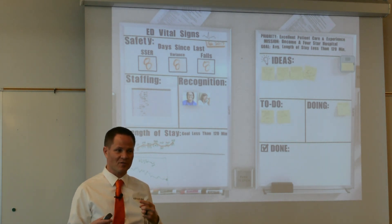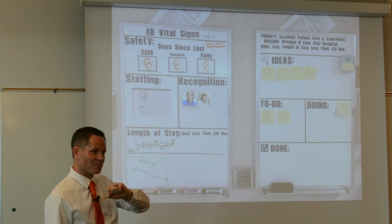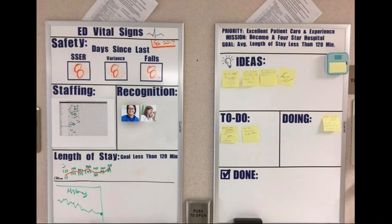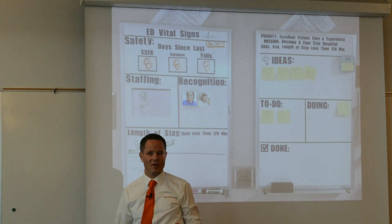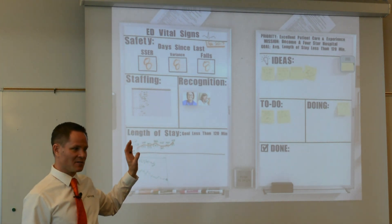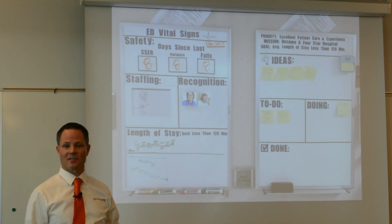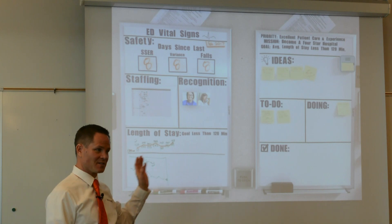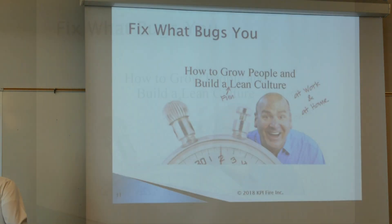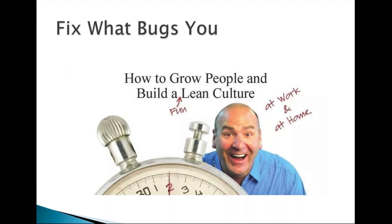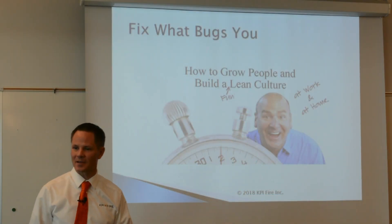An example of a basic huddle board from a hospital: how are we doing on safety, staffing, who are we recognizing today, and what is our key KPI — in this case, length of stay. Nothing fancy, just the bare basics the team needs to discuss daily. The engine of continuous improvement is then looking at that data and moving to the continuous improvement board: what ideas do we have, which can we do now, and which are done?